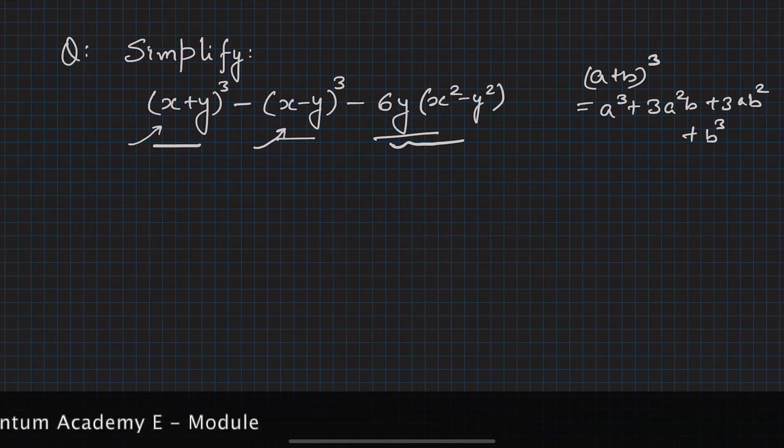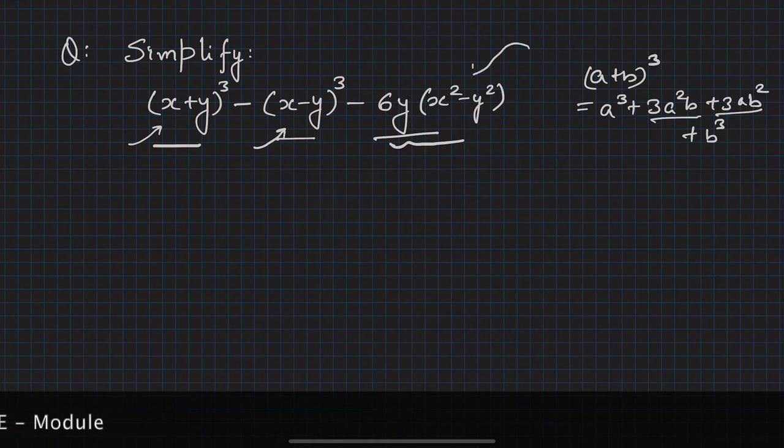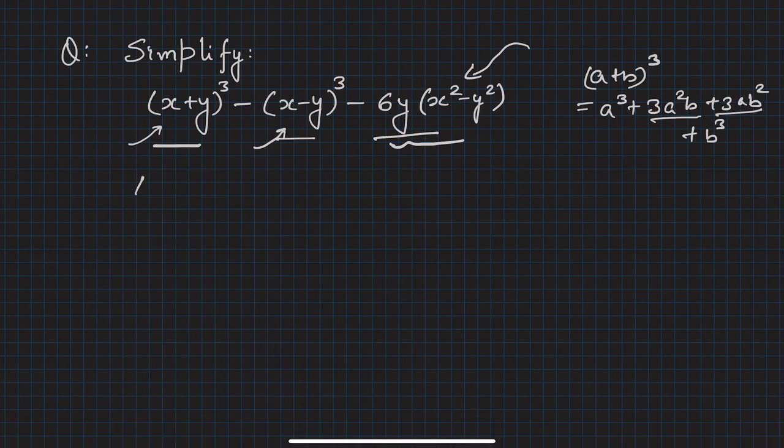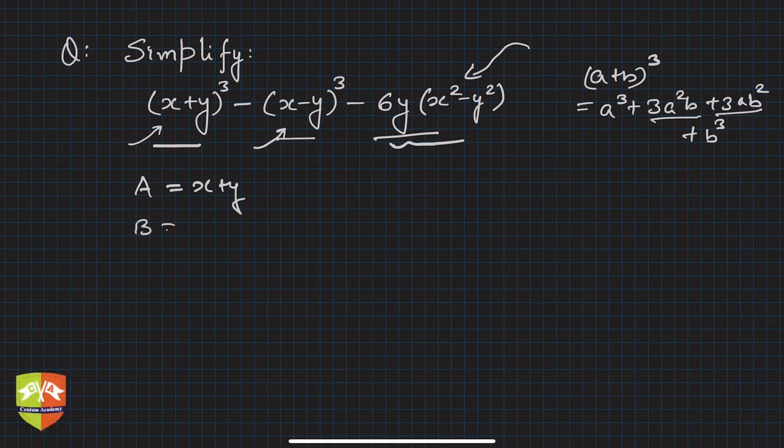How to go about it? If I treat A as (x+y) and B as (x-y), then in the given expression I have A³ and B³ very easily. No problem - A³ is there, B³ is there.